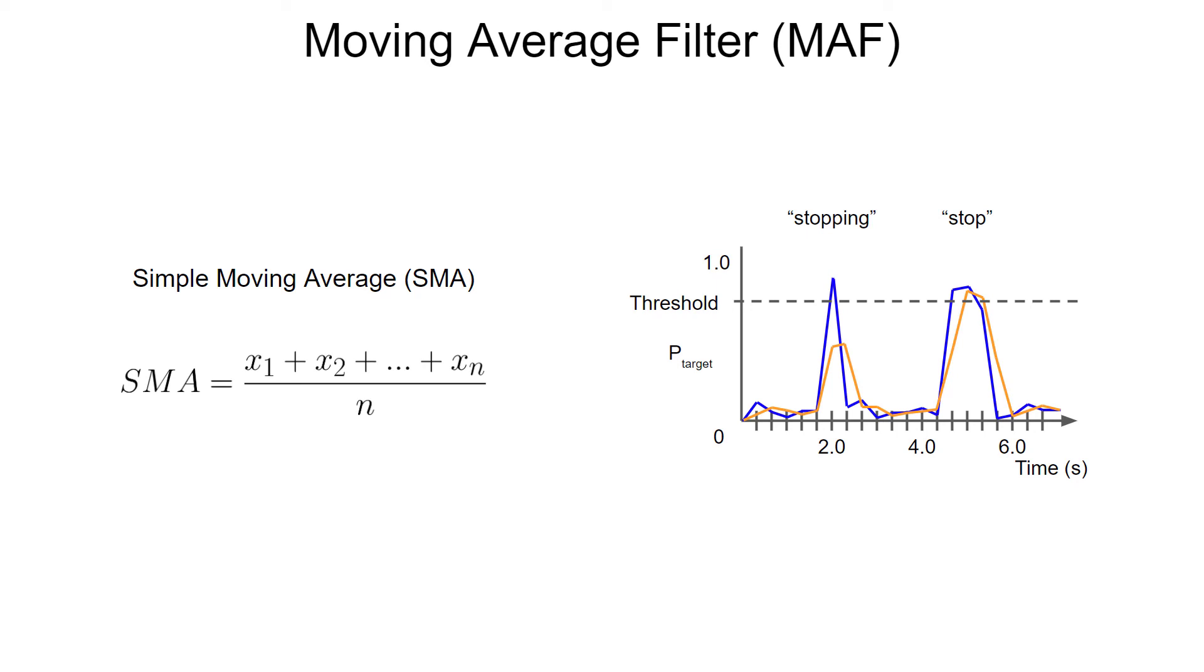The spoken word stopping might cause the confidence score to rise as the model hears the first part stop, but then immediately drop as the ing part wasn't what it was looking for. It needs a pause after stop to truly match the target keyword. A moving average can help prevent these types of issues. The downside is that they introduce some lag into your system. It now takes an extra cycle or more for the moving average to catch up, which means that your action won't trigger right away when the keyword is detected.